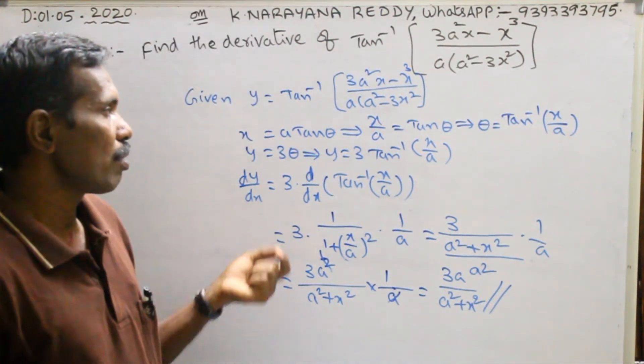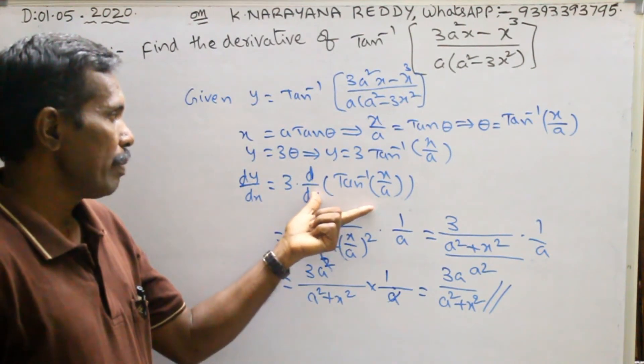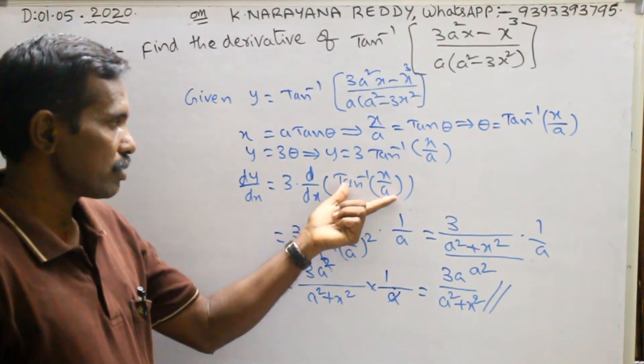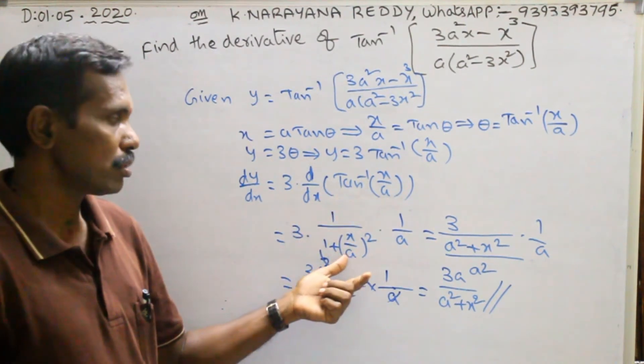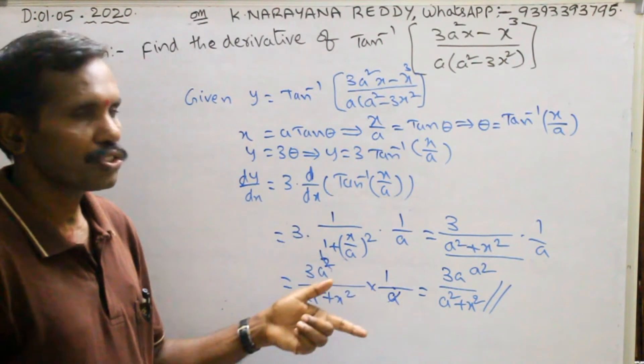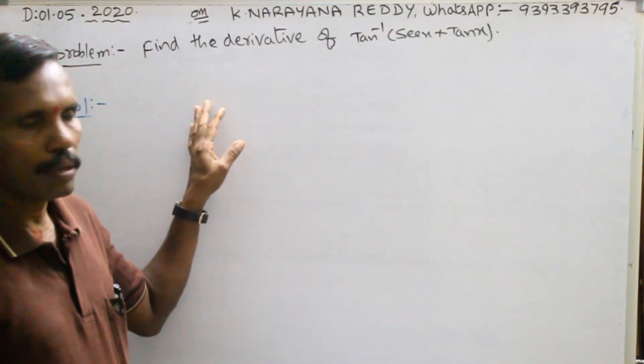Here we are using the formula: d/dx of tan inverse(x/a) equals 1/(1 + x²/a²) times 1/a. Just simplify — that's all. See the next problem.